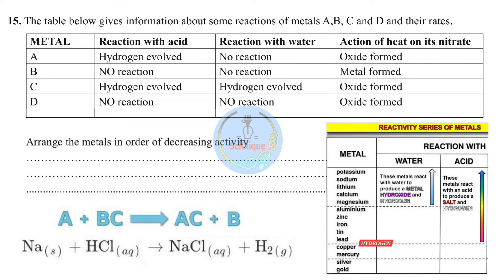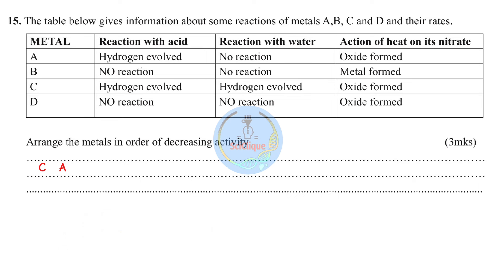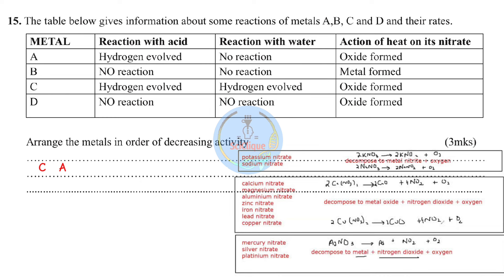To distinguish B and D: examine decomposition of their nitrates. The more a nitrate decomposes, the less reactive the metal. Silver — the least reactive — decomposes most completely to form the metal. If metal B forms the metal on decomposition, then B is less reactive than D. So the reactivity order is: C > A > D > B.